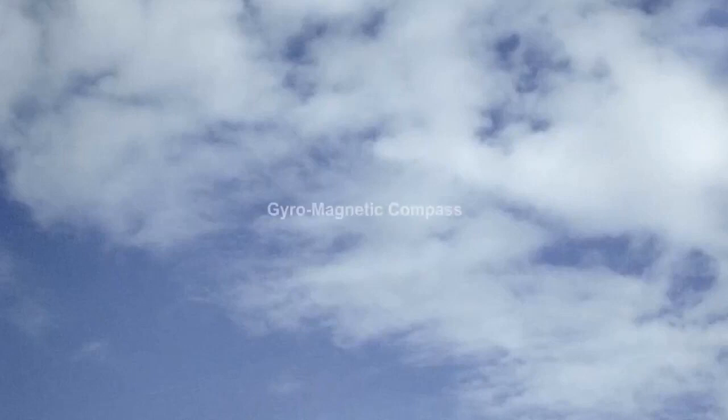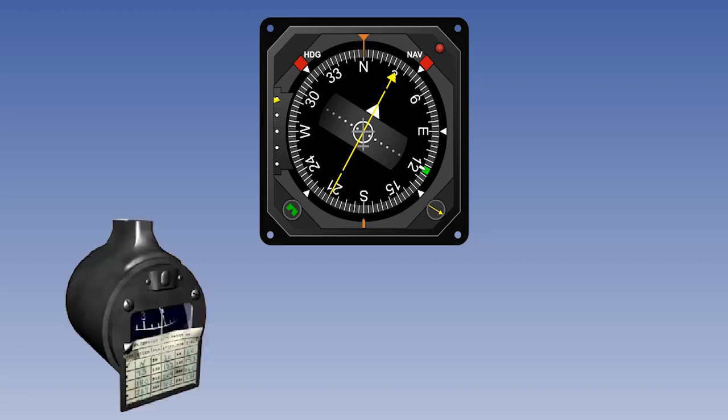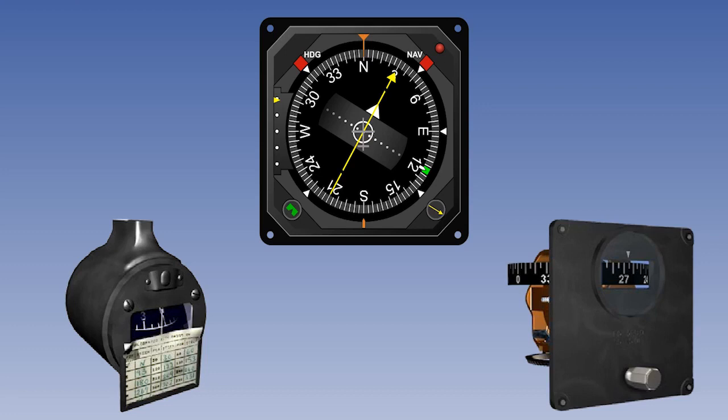This is the first of three lessons on the gyromagnetic compass. The gyromagnetic compass is an instrument which evolved out of the need to overcome the limitations of both the direct reading magnetic compass and the directional gyro indicator. We'll start by reminding ourselves of these limitations and then go on to see how the design of the gyromagnetic compass removes or eliminates them.